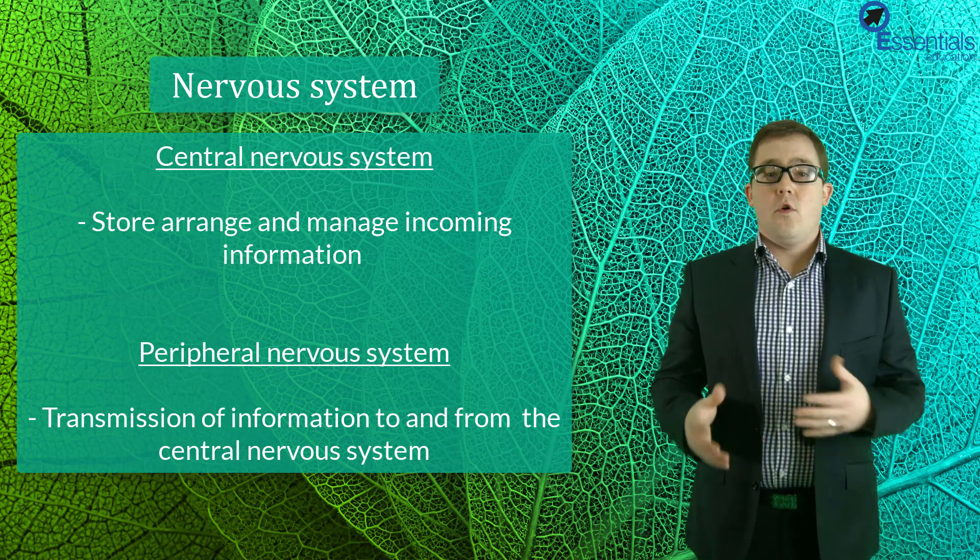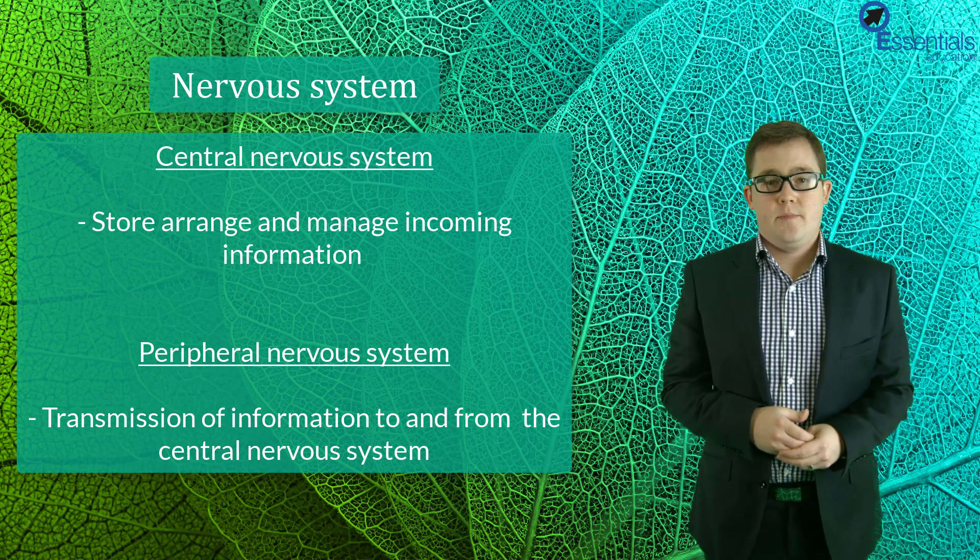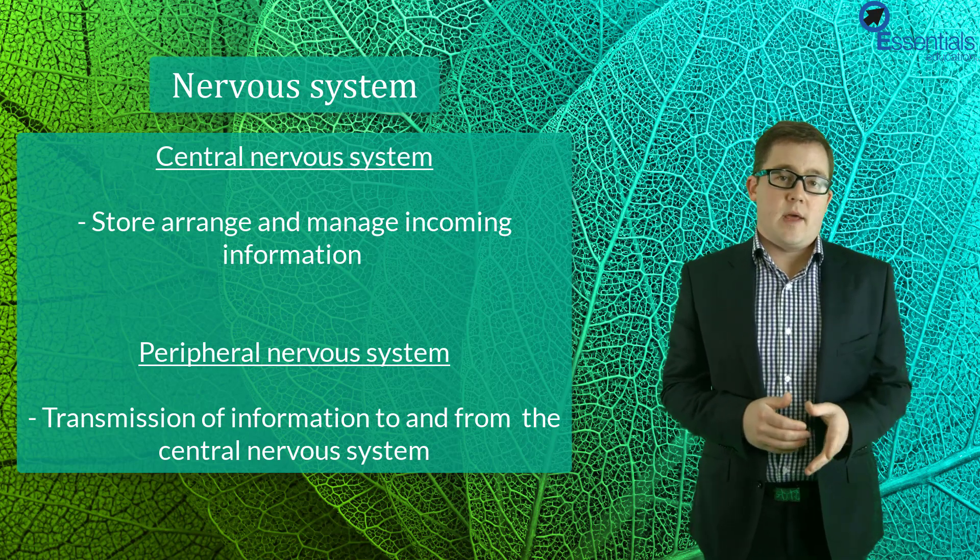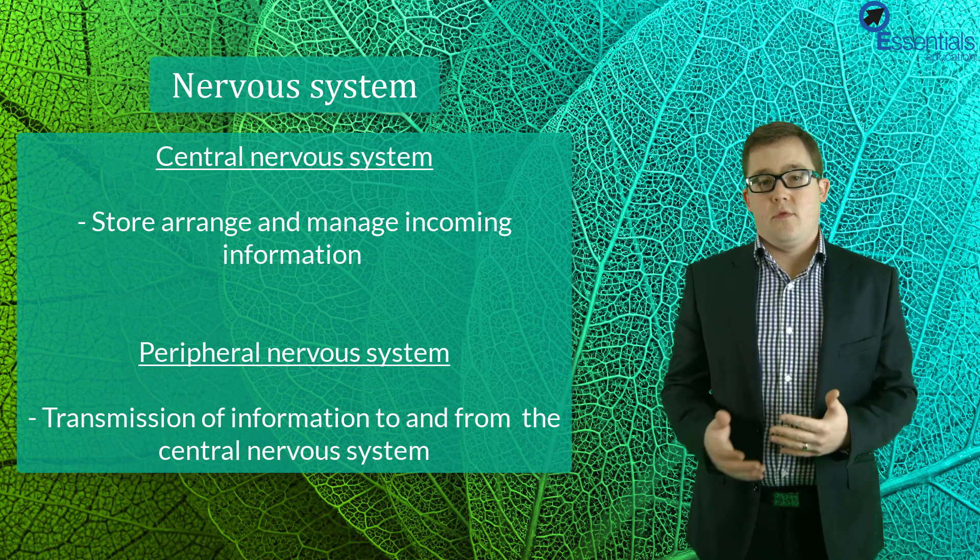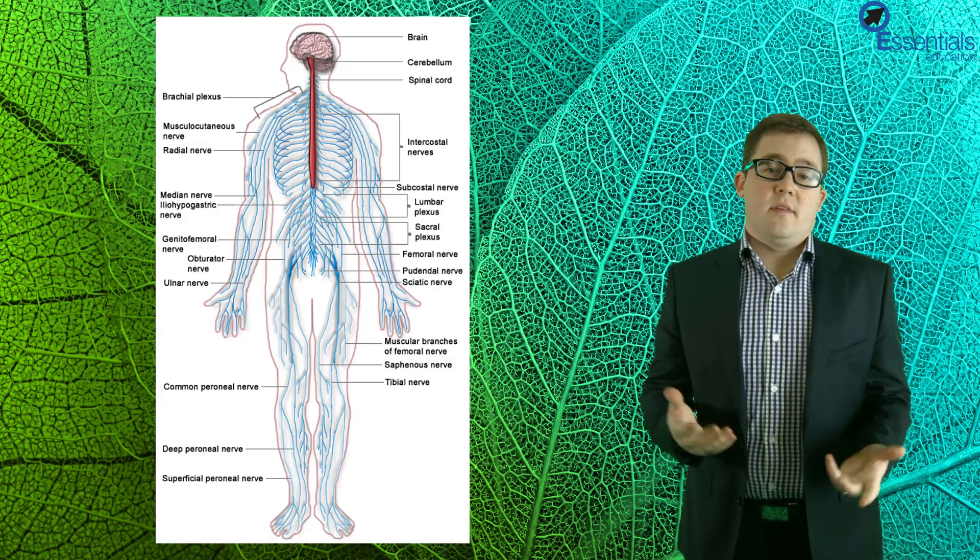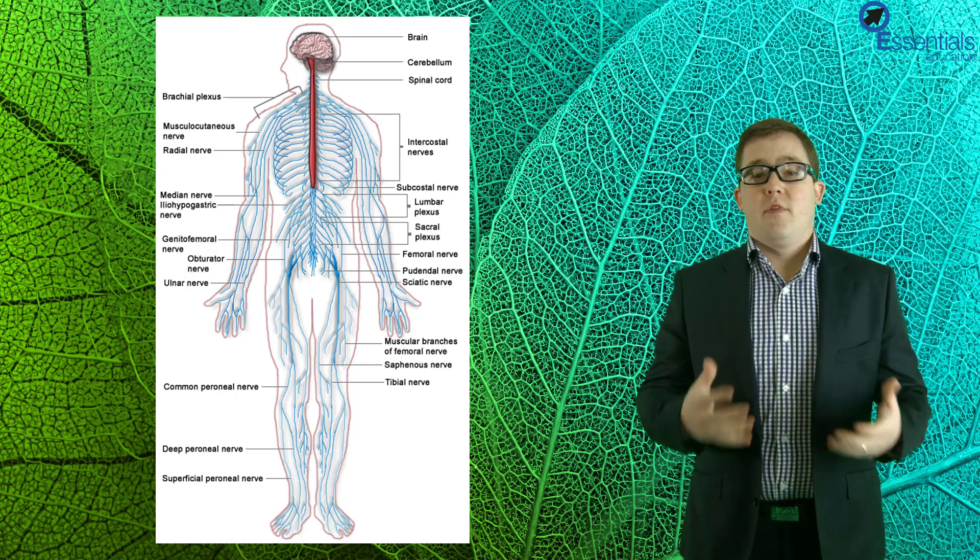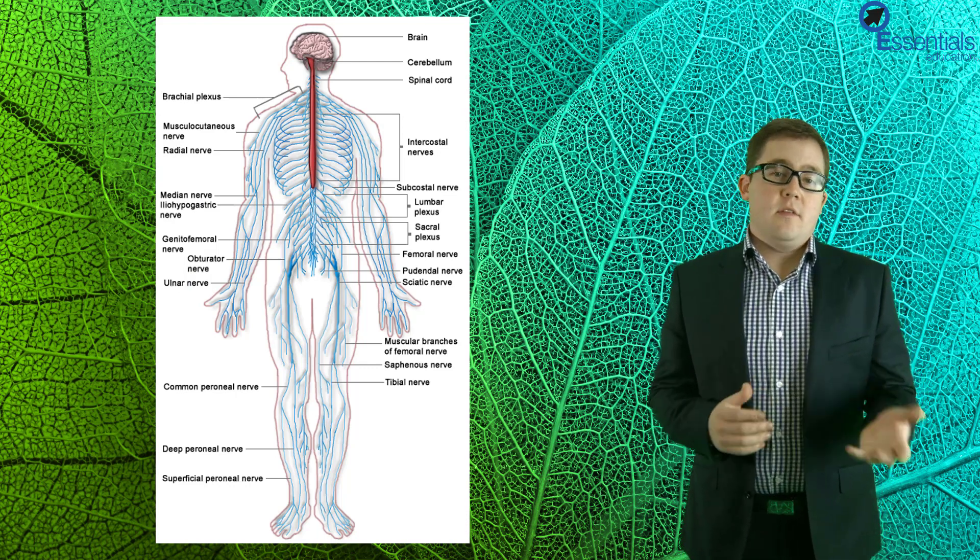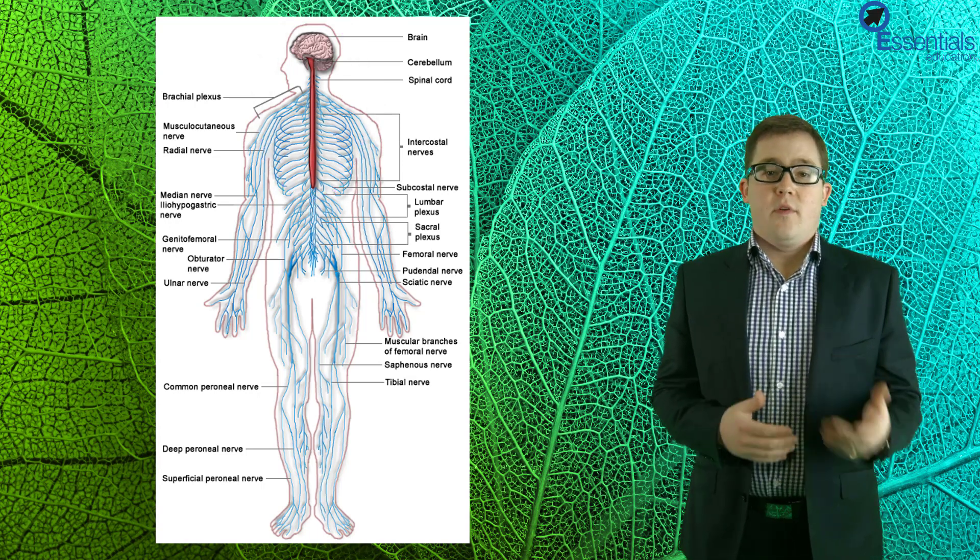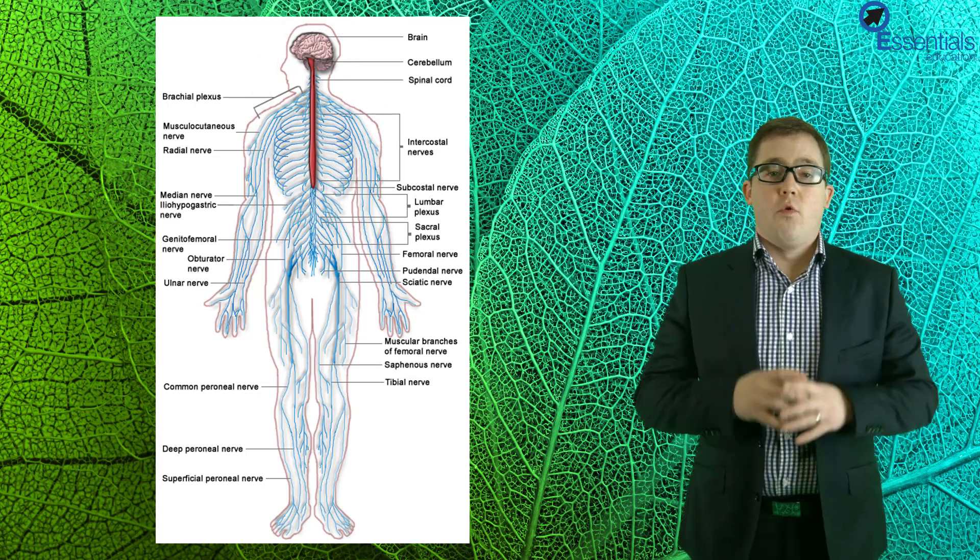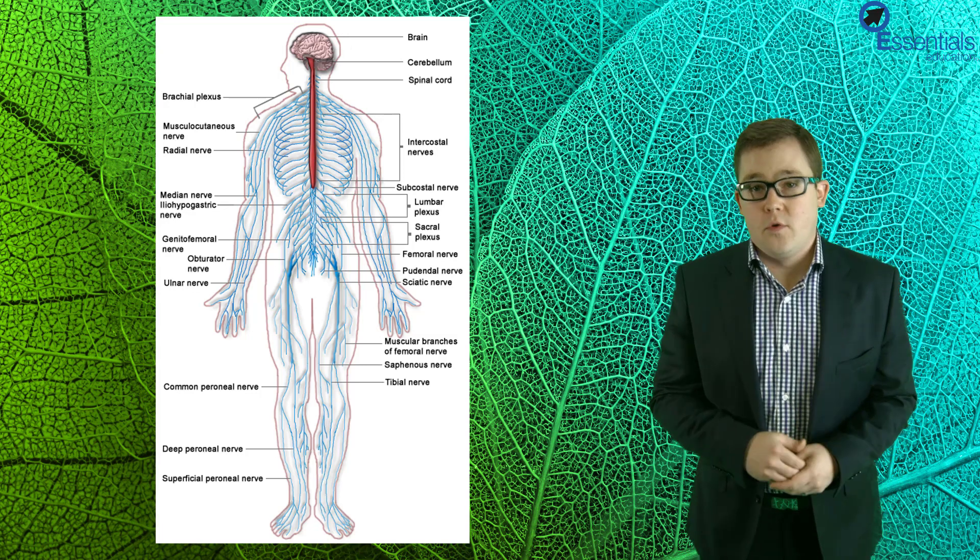The central nervous system's role is to store, arrange and manage incoming information, whereas the peripheral nervous system on the other hand is mainly involved in the transmission of information to and from the central nervous system. This image helps us to outline the locations of the central and peripheral nervous system. As you can see, the central nervous system is made up of the spinal cord and brain, whereas the peripheral nervous system, shown in blue, runs all throughout the body and connects to your spinal cord.